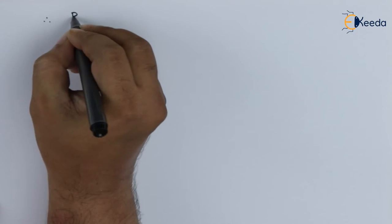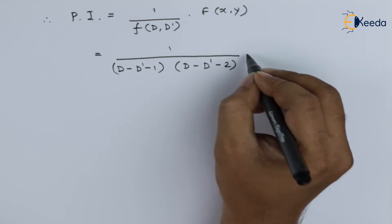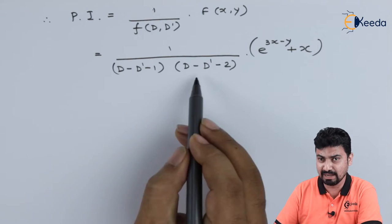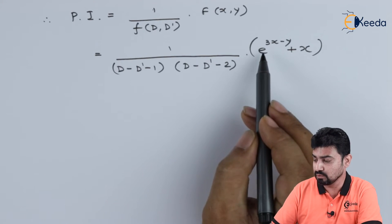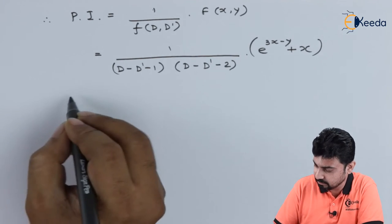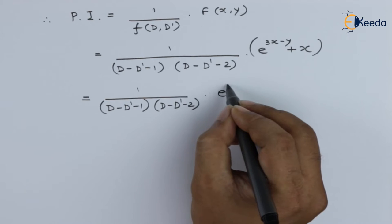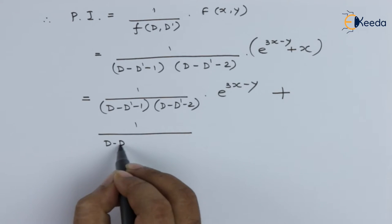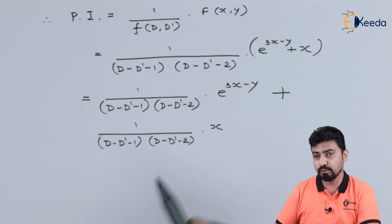Therefore, the PI will be 1/f(D, D') applied to the right-hand side. The operator 1/f(D, D') is applied to both parts of the function of x and y — that is, e^(3x − y) and x. So we will apply it to both terms separately.